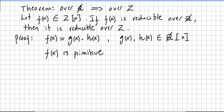It is obvious that we can assume that f(x) is primitive, because we could divide f(x) and g(x)·h(x) by the content of f(x). We divide both sides by the content of f(x), and of course f(x) will become primitive.